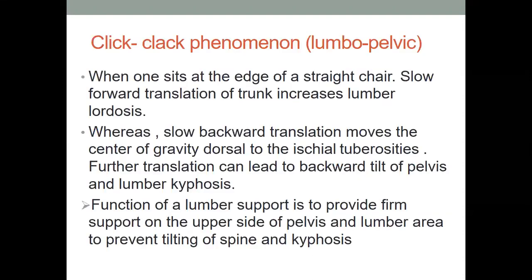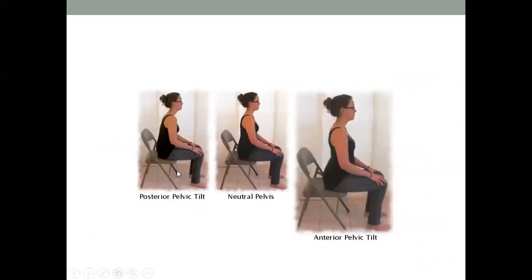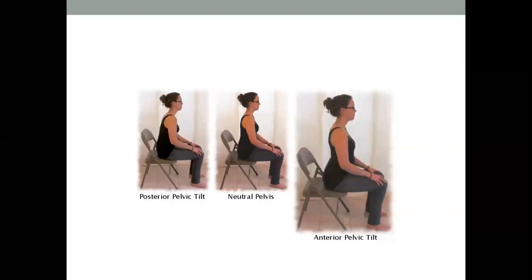What is the click-clack phenomenon? If you are sitting on a chair and the backrest is not behind you — sitting on the edge — what happens is that the lumbar spine will have anterior translation and the lumbar lordotic curve will increase. If it is posteriorly bent, the lumbar lordotic curve will be straightened. In neutral position it maintains the normal curve, but it can only hold this for about 5 minutes without support — that is why backrest is very important.